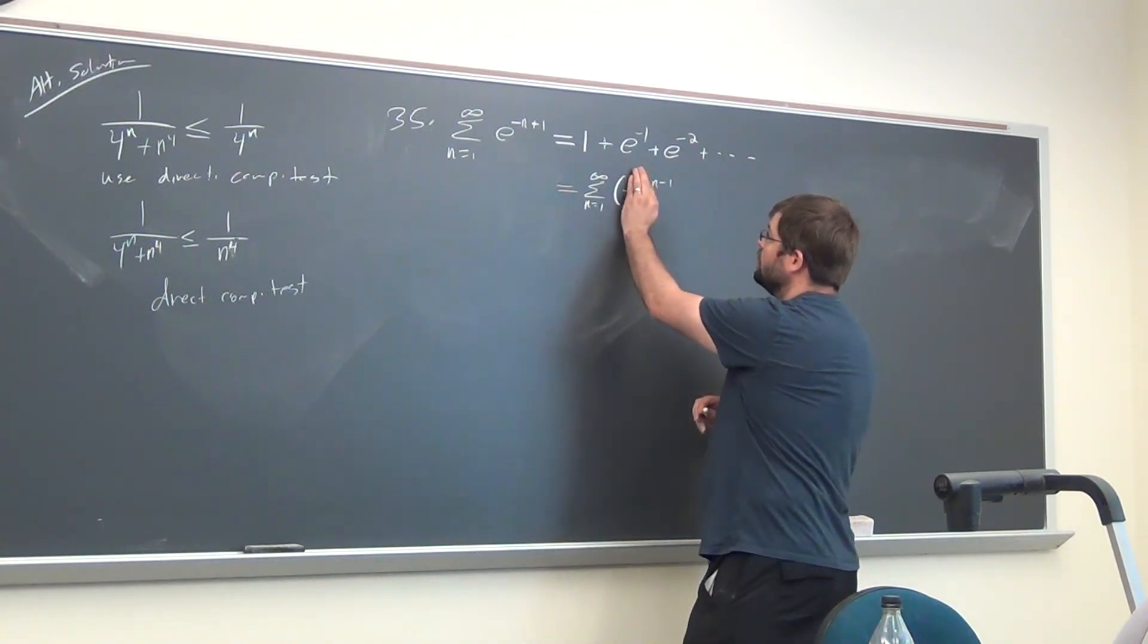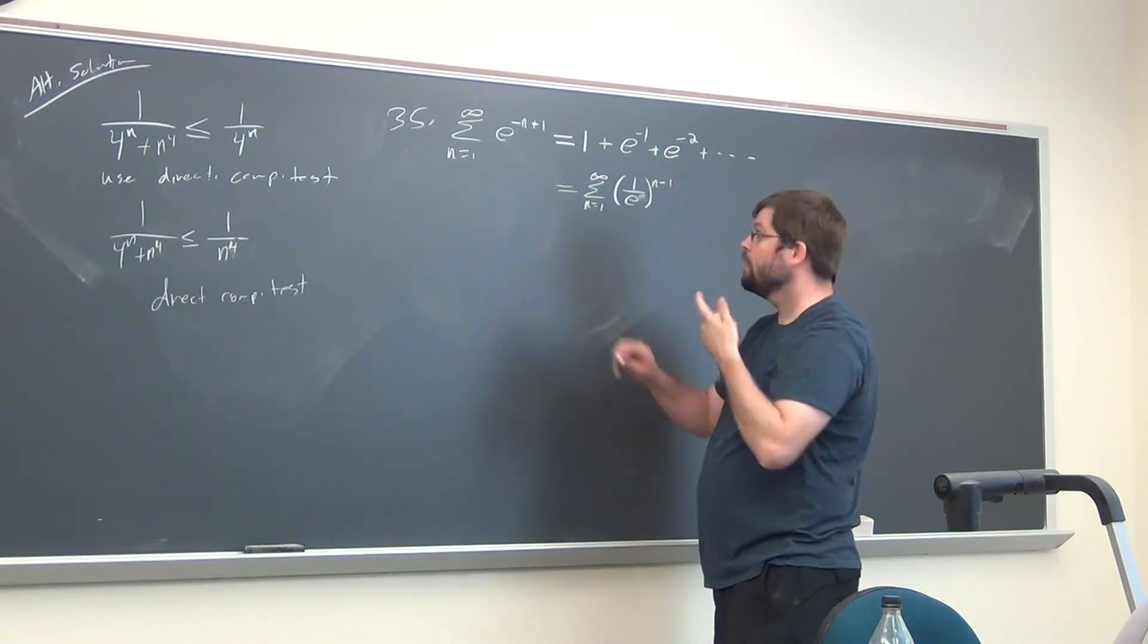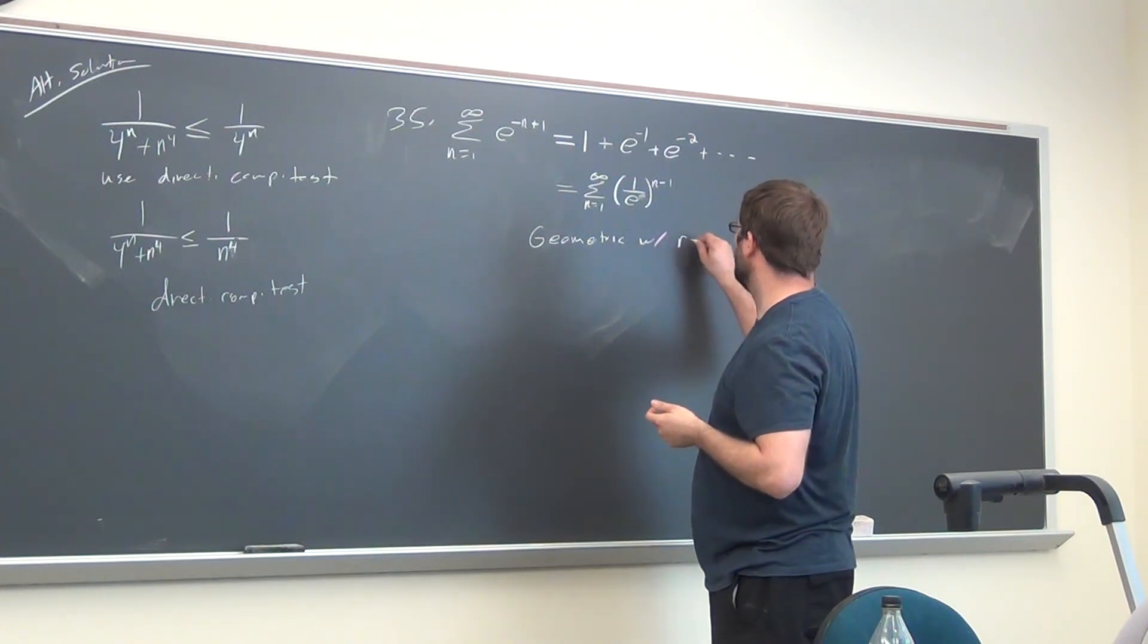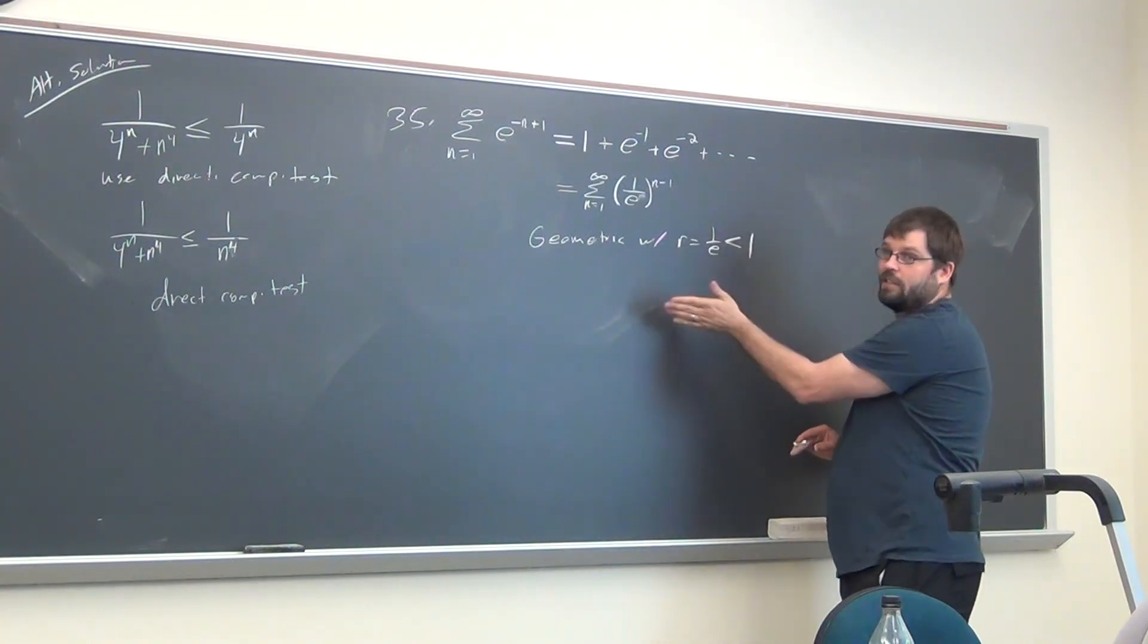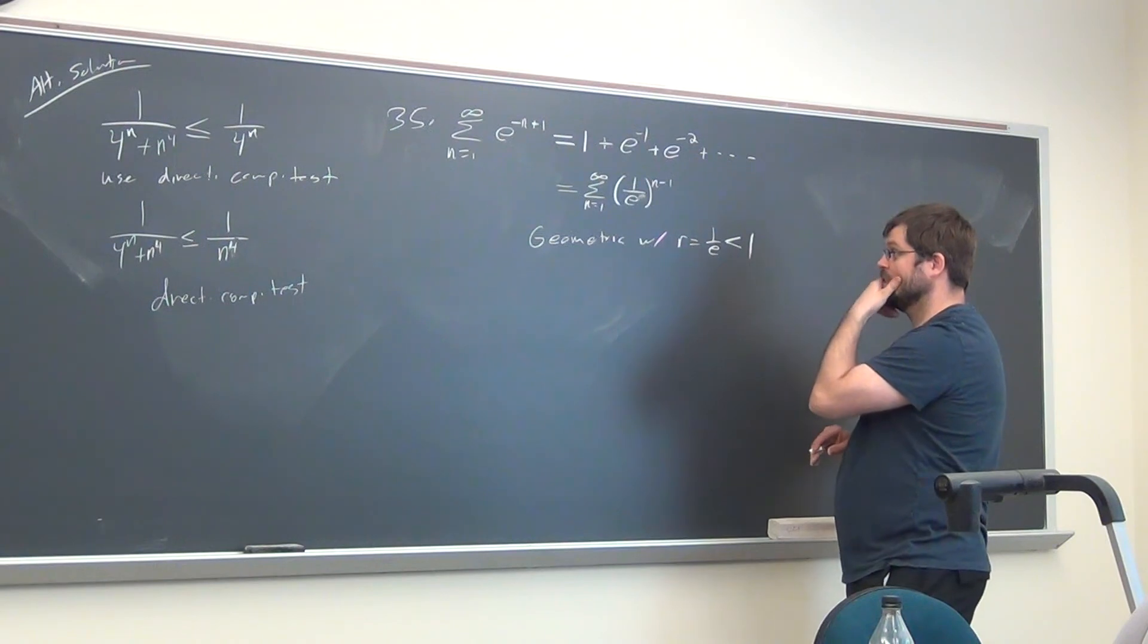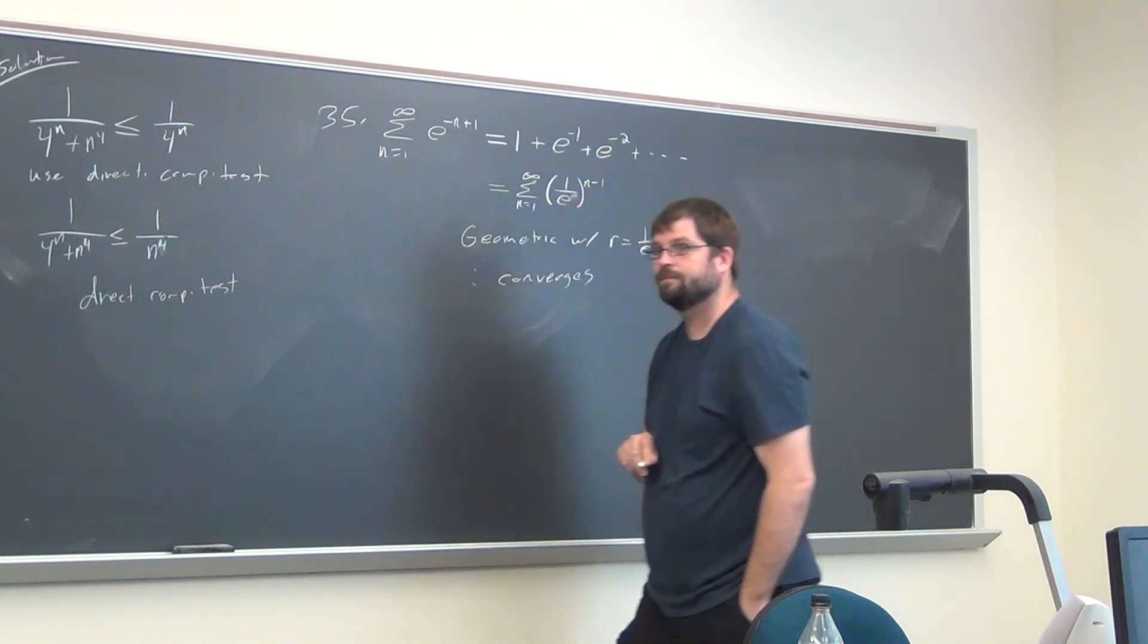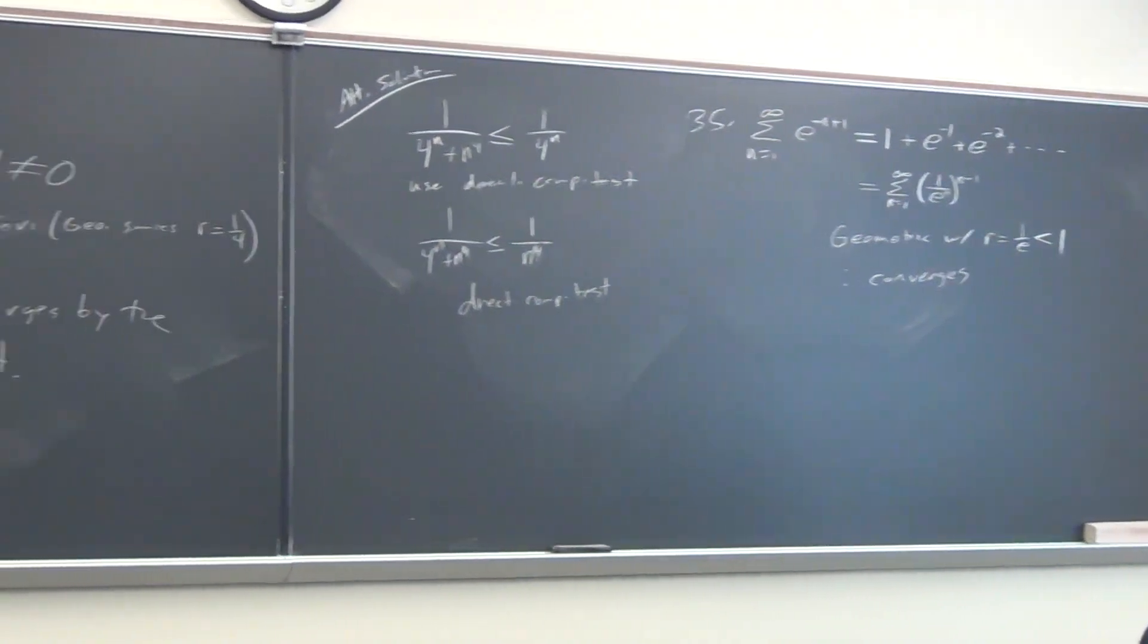It's geometric and converges because 1 over e is less than 1. It's geometric with r equal to 1 over e, which is less than 1. But again, if it was greater than 1, it's still geometric, and we could conclude that it diverged. But since it is less than 1, then we can conclude that it converged, so therefore it converges. Does that make sense? Yeah. Okay, that's good then. Thank you.